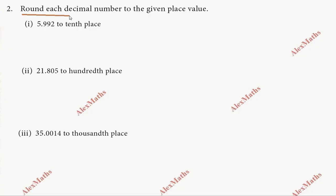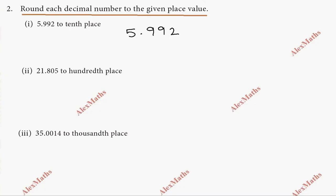Round each decimal number to the given place value. This subdivision involves place value. First subdivision: 5.992. Round off to the tenths place. The tenths place is the first digit after the decimal point — underline it.